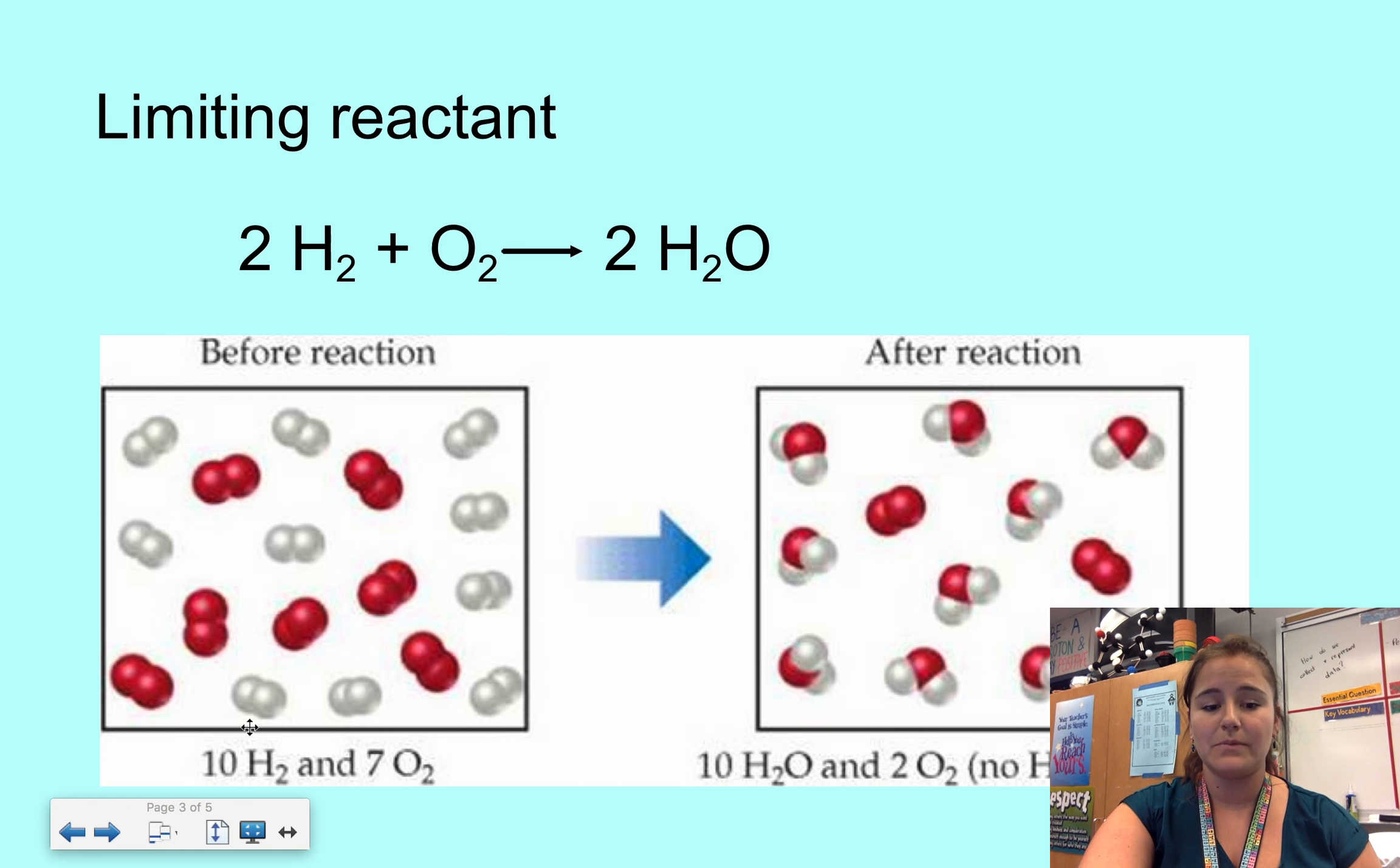So if I have 10 moles of hydrogen gas and seven moles of oxygen gas, my hydrogen gas is going to be my limiting reactant, because I only have enough to make 10 moles of water. Oxygen, I have seven moles of oxygen. But for every one mole of oxygen, I can make two moles of water. So with seven moles of oxygen, I could theoretically make 14 moles of water. However, I don't have enough hydrogen to make that 14 moles of water. I only have enough hydrogen to make 10 moles of water.